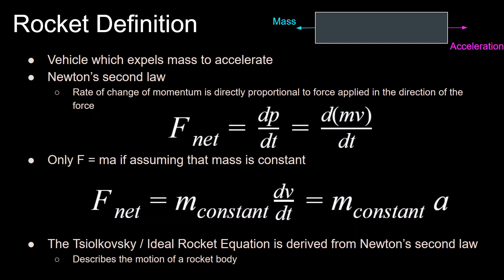In order to understand the derivation of the Tsiolkovsky ideal rocket equation, we must make sure we understand Newton's second law, which states that the rate of change of momentum is directly proportional to the force applied in the direction of the force. F net is the derivative of momentum with respect to time, where momentum is mass times velocity. A lot of times we're used to seeing Newton's second law as F equals MA, but this is only true when the mass of the system is constant. In that case, mass is factored out of the derivative, leaving us with F net equals M constant times the derivative of velocity with respect to time, which equals MA.